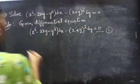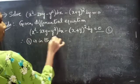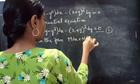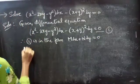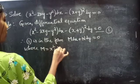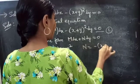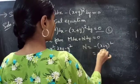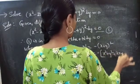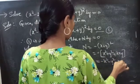The given differential equation is in the form M dx plus N dy equals to 0, where M equals to x squared minus 2xy minus y squared, and N equals to minus of (x plus y) whole squared, which equals to minus x squared minus y squared minus 2xy.